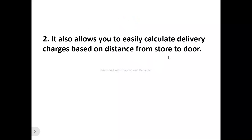Pro number two: Zapier allows you to easily calculate delivery charges based on distance from store to door. With this application, you can calculate delivery and shipping costs based on the distance your customers live from your brick-and-mortar store or warehouse. You can switch between miles or kilometers, and calculate shipping rates and delivery distance using either the shortest or fastest route. You can also add different delivery rates according to product weight and price.